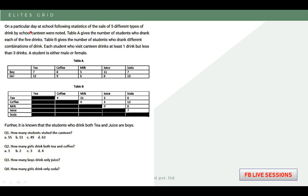The statement given to us: on a particular day at school, the following statistics of the sale of 5 different types of drinks by a school canteen were noted. Table A gives the number of students who ranked each of the 5 drinks. The drinks are tea, coffee, milk, juice, and soda.